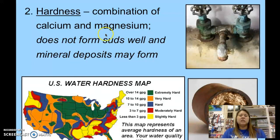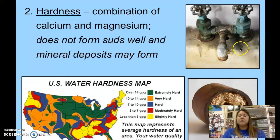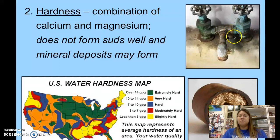That lack of suds is because of water hardness. Another thing you may have seen is on faucets, outdoor spigots, and fixtures — sometimes there's a green-white mineral corrosion on the metal. That's also due to water hardness.